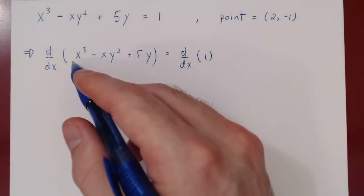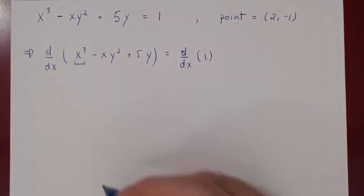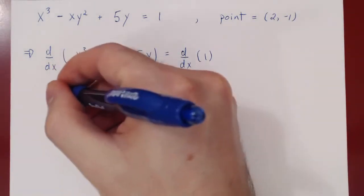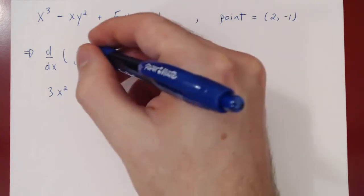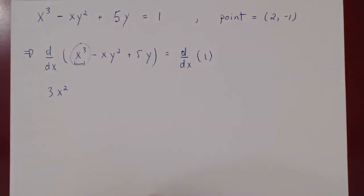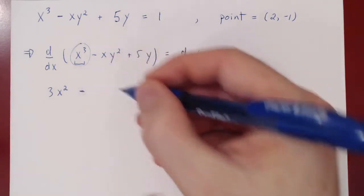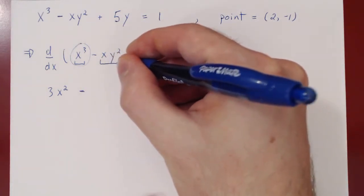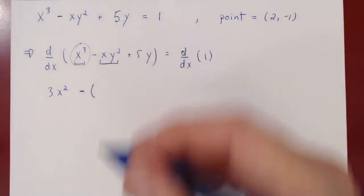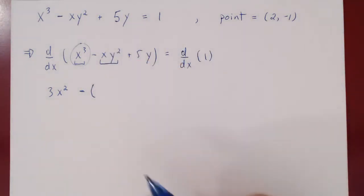The derivative of x cubed with respect to x is simply 3x squared. Then minus, and we need the derivative of x times y squared. What goes here is the derivative of x times y squared, where we have to use the product rule.